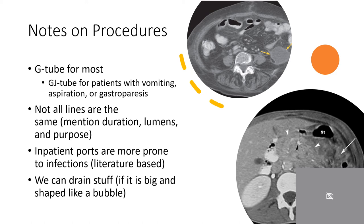Additionally, not all lines are the same. It is important to mention the purpose of the line in the request, and at times the duration of access needed and the number of lumens required. Single lumen PICCs are fine for antibiotics or IV pain medications. Single lumen ports are also usually fine for chemotherapy. Dialysis usually needs two lumens. More lumens, however, is not always better, as they have smaller openings with a higher chance of occlusion. Inpatient ports are also more prone to infection, so if possible, outpatient ports should be placed.